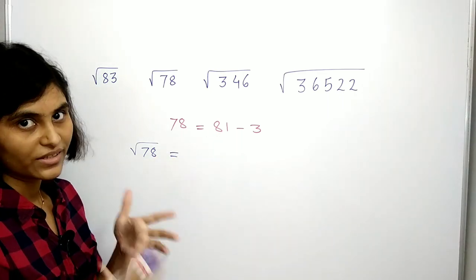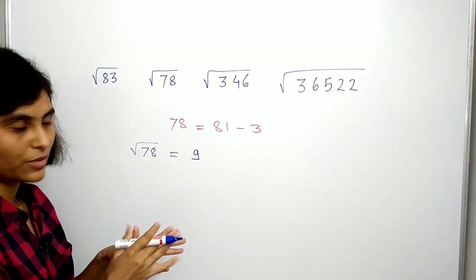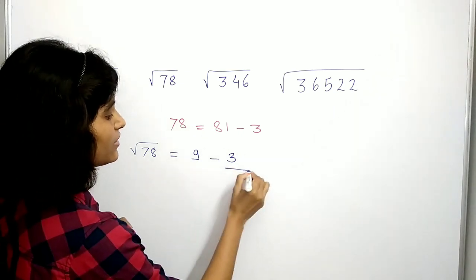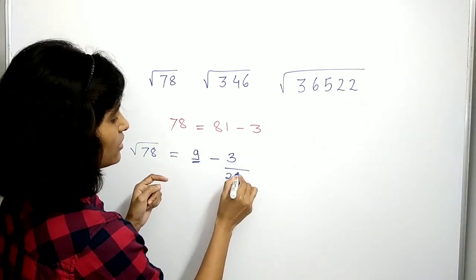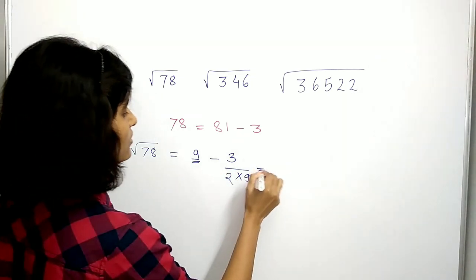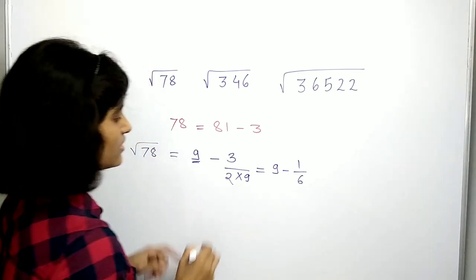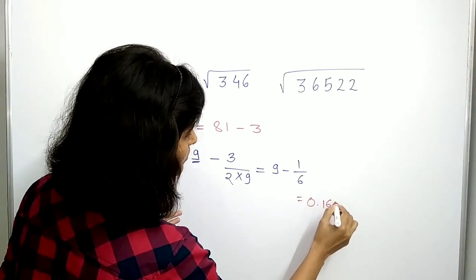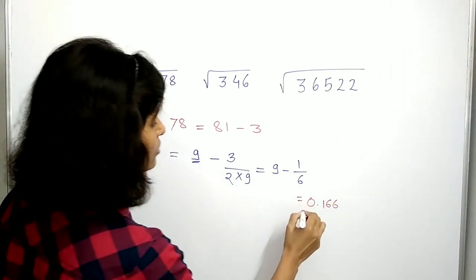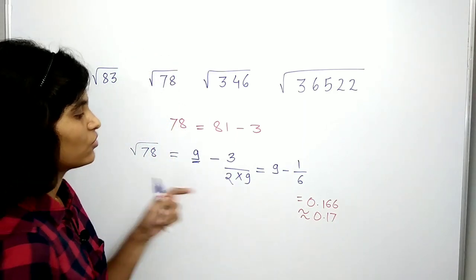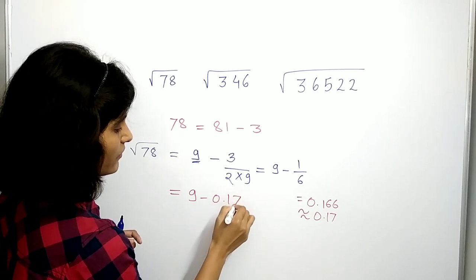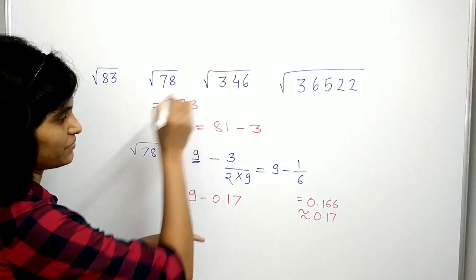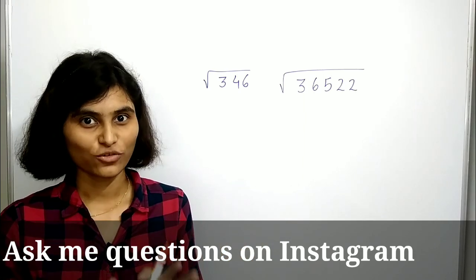To find the square root of 78, the square root of 81 is 9. The next step: take minus 3 as it is and divide by 2 times 9. Simplifying, this is 9 minus 1/6. Now 1/6 is approximately 0.166, so approximately 0.17. Therefore square root of 78 is 9 minus 0.17, which equals 8.83.